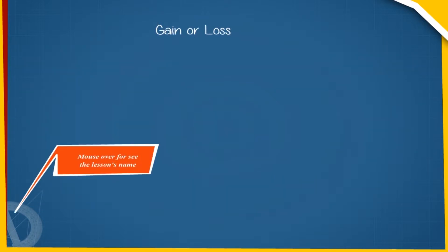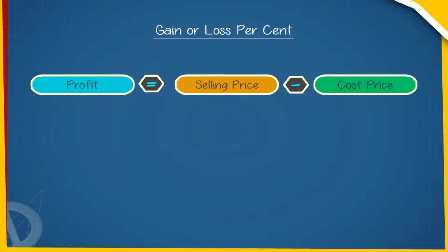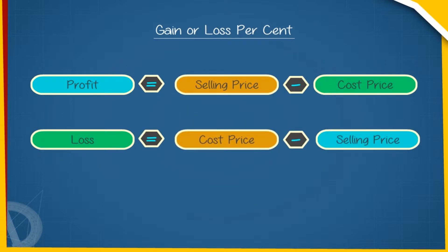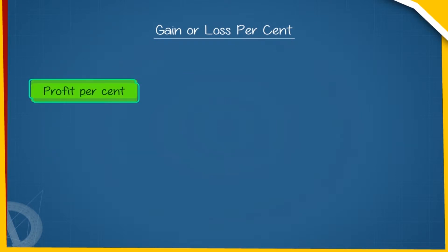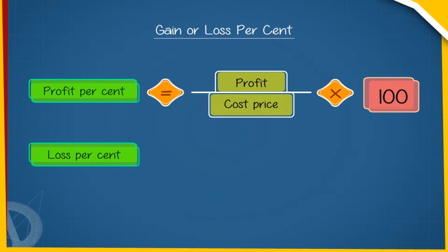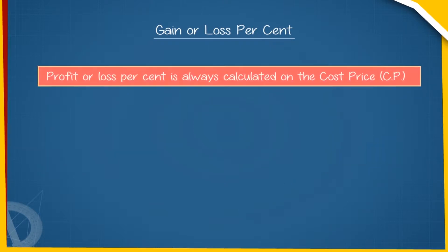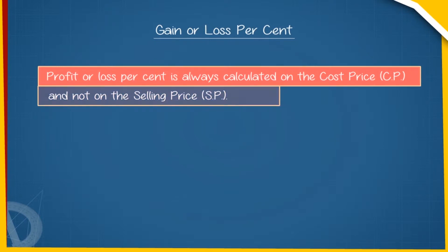Gain or loss percent: Profit equals selling price minus cost price. Loss equals cost price minus selling price. Profit percent equals profit upon cost price into 100. Loss percent equals loss upon cost price into 100. Profit or loss percent is always calculated on the cost price (CP), and not on the selling price (SP).